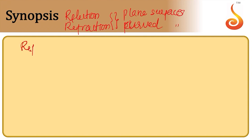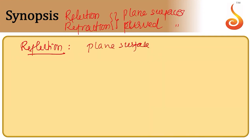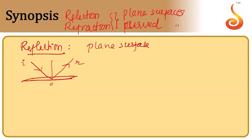First of all, reflection. Let us consider a plane surface. According to laws of reflection, you know the incident ray I, the reflected ray R, and the normal at the point of incidence all lie in the same plane, called the plane of incidence. It is also known as the plane of reflection. According to the laws of reflection, the angle of incidence and angle of reflection are equal to each other.